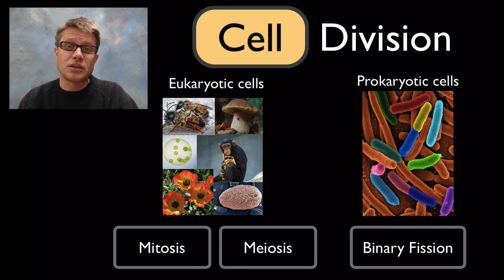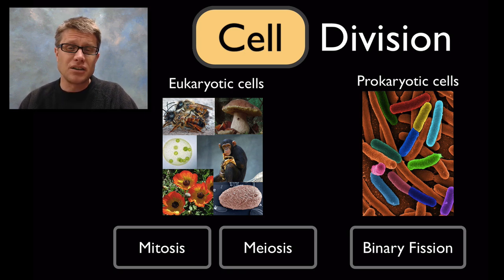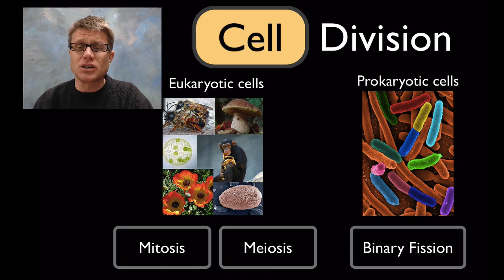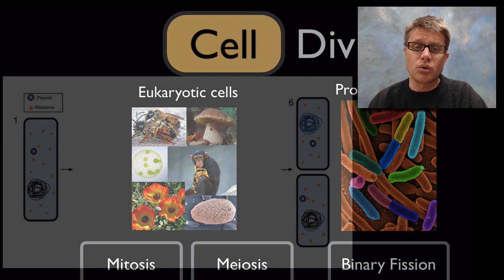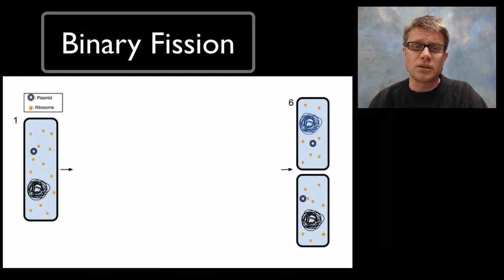In us, sex is important because it gives us variability in the next generation. In bacteria, mutation and other ways of sharing information are more important. So let's start by talking about bacteria.